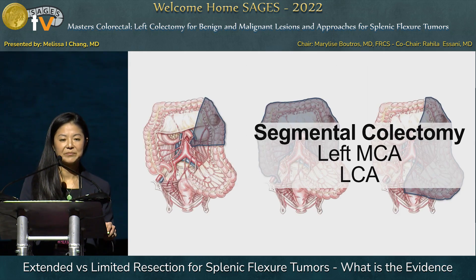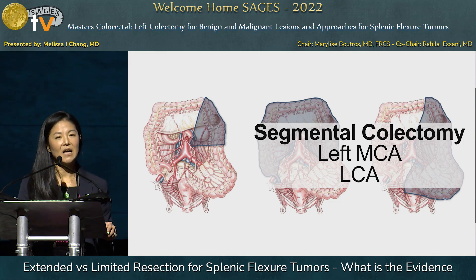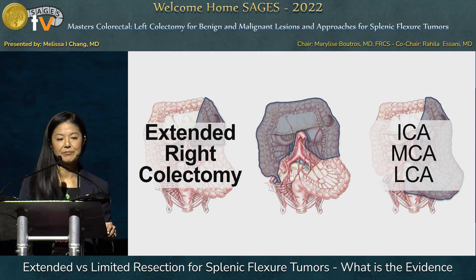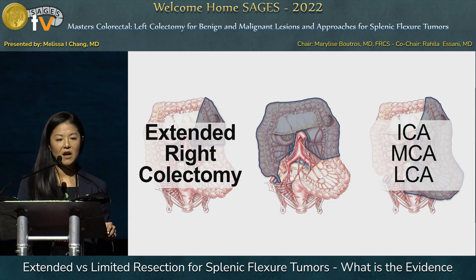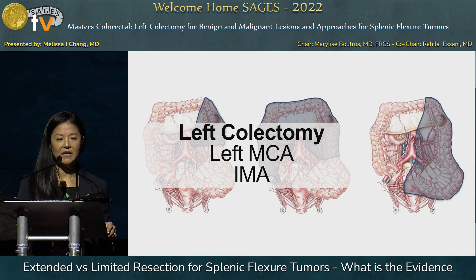What kind of operations are performed? There is a segmental colectomy involving high ligation of the left middle colic artery and the left colic artery — traditionally a transverse to descending anastomosis. An extended right colectomy involves high ligation of the ileocolic artery, the middle colic artery, and the left colic artery with an ileal to descending colonic anastomosis. And the left colectomy uses the left middle colic artery down to the inferior mesenteric artery, resulting in a transverse to rectal anastomosis.